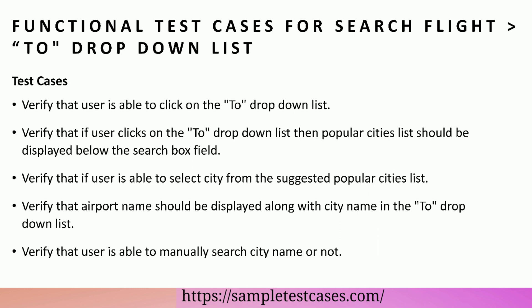Functional test cases for search flight to drop-down list. Verify that user is able to click on the to drop-down list. Verify that if user clicks on the to drop-down list then popular cities list should be displayed below the search box field. Verify that user is able to select city from the suggested popular cities list. Verify that airport name should be displayed along with city name in the to drop-down list. Verify that user is able to manually search city name or not.